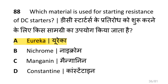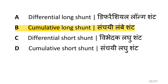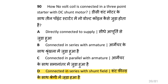Which material is used for starting resistance in DC starter? Which DC compound motor is operated at constant speed under varying load? That is cumulative long shunt. How is the no-volt coil connected in a 3 point starter with DC shunt motor? That is connected in series with the shunt field.